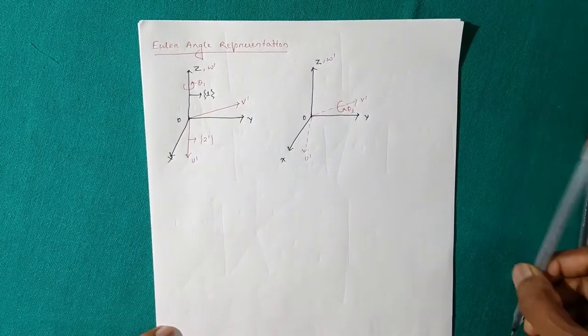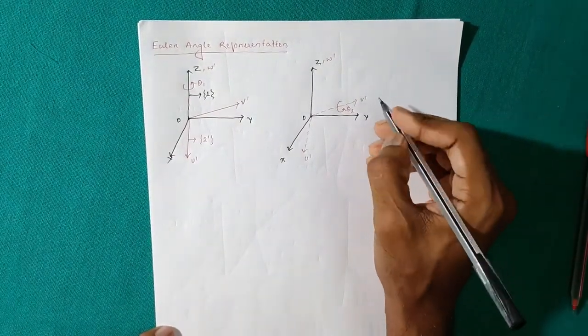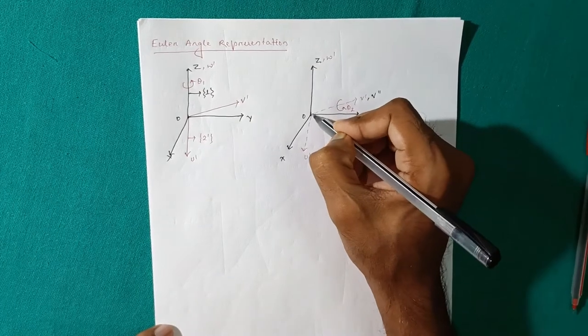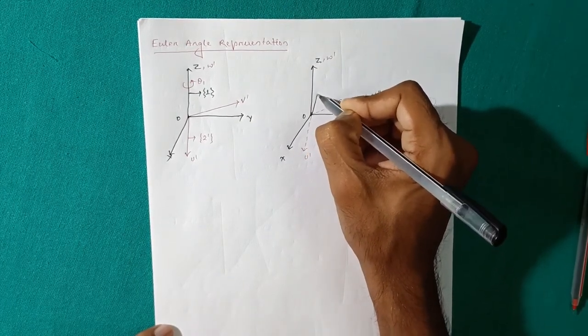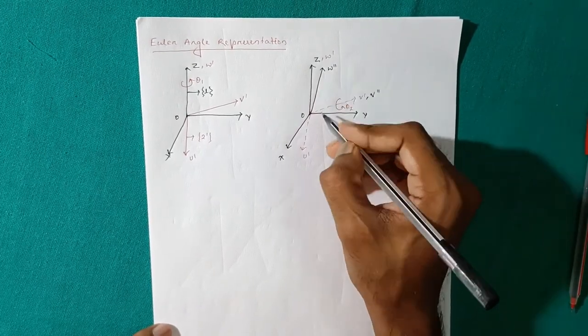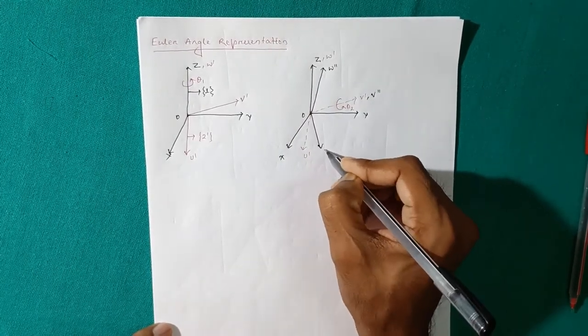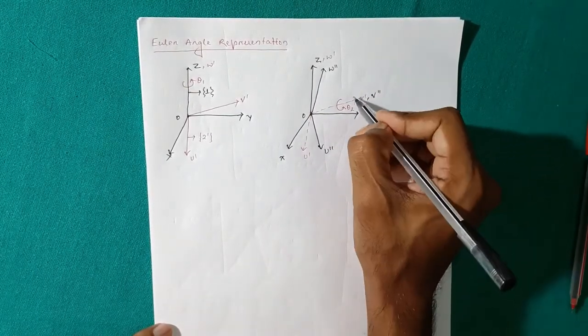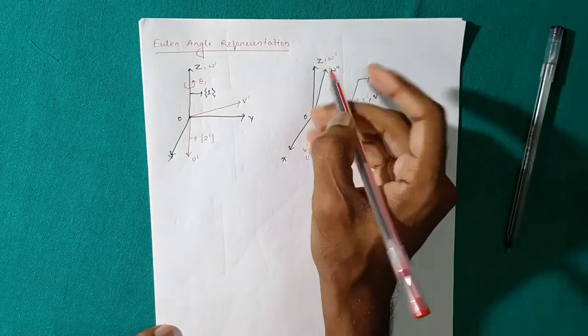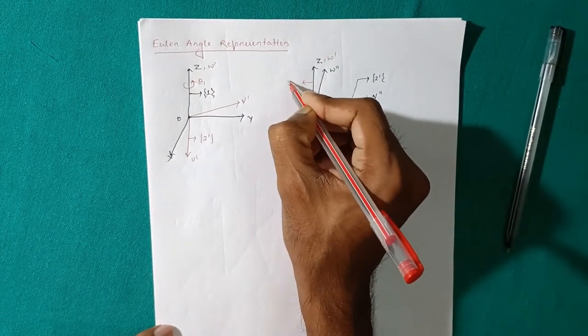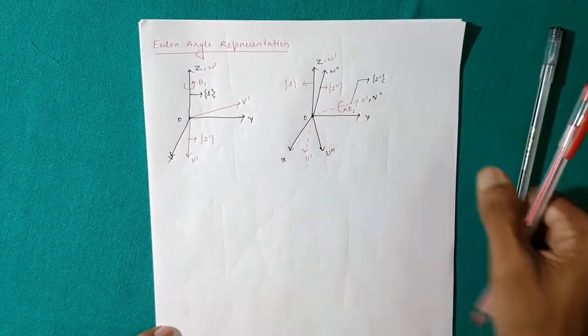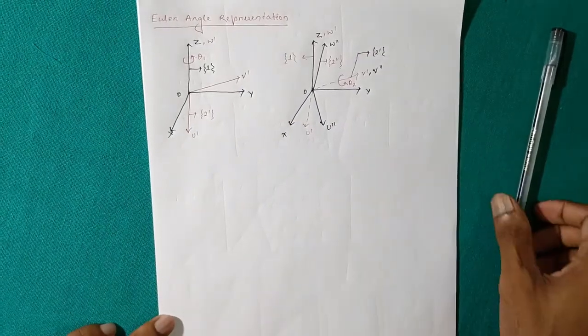So what we will get? We will get as this is V prime, this is W prime, and here this is U prime, okay. So this frame is 2 prime, and the base frame is 1 prime, and the latest frame is 2 double prime, clear? So in third step what we will do?